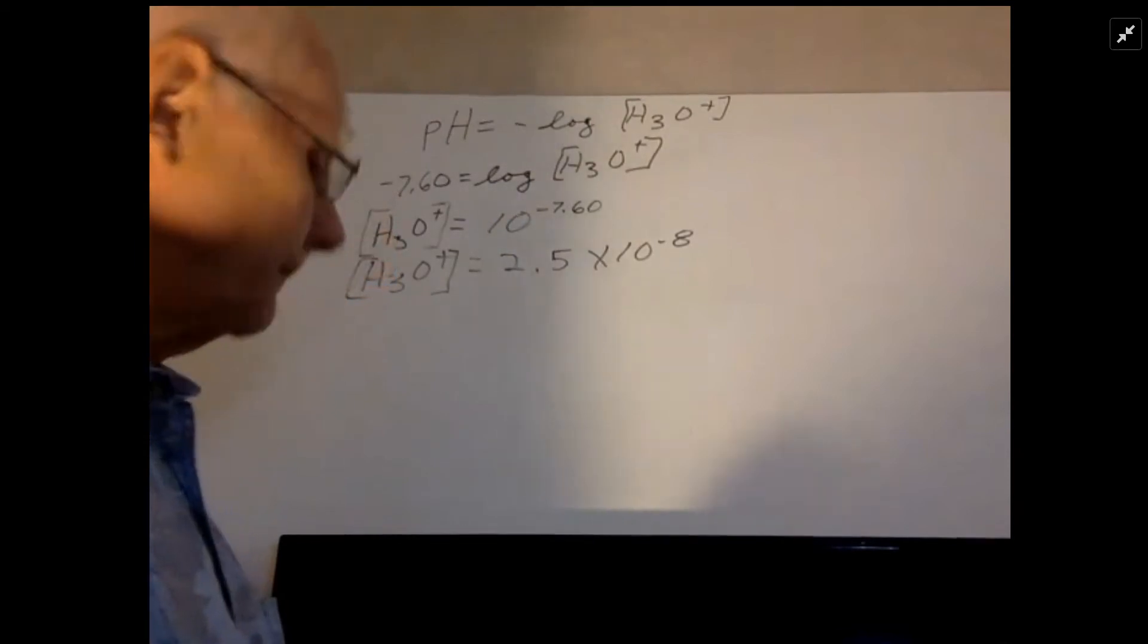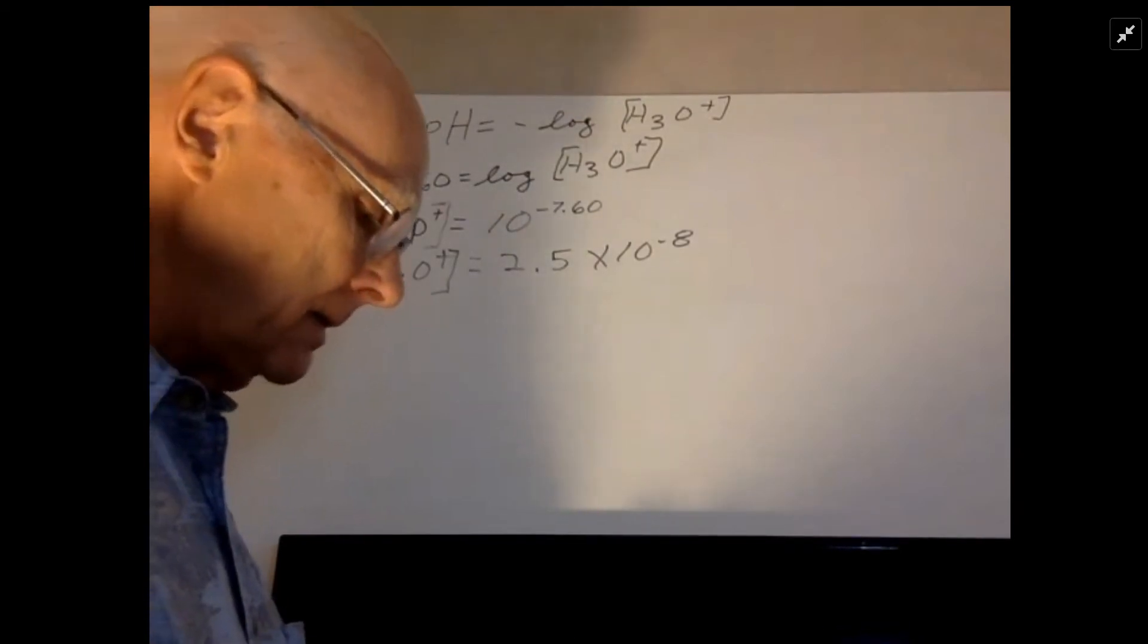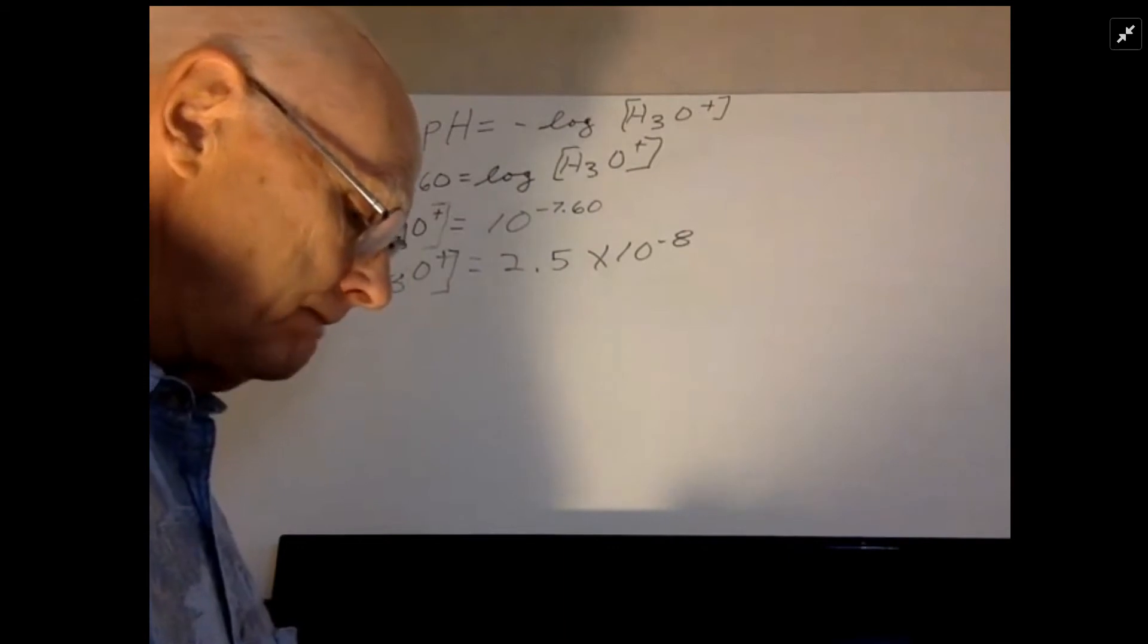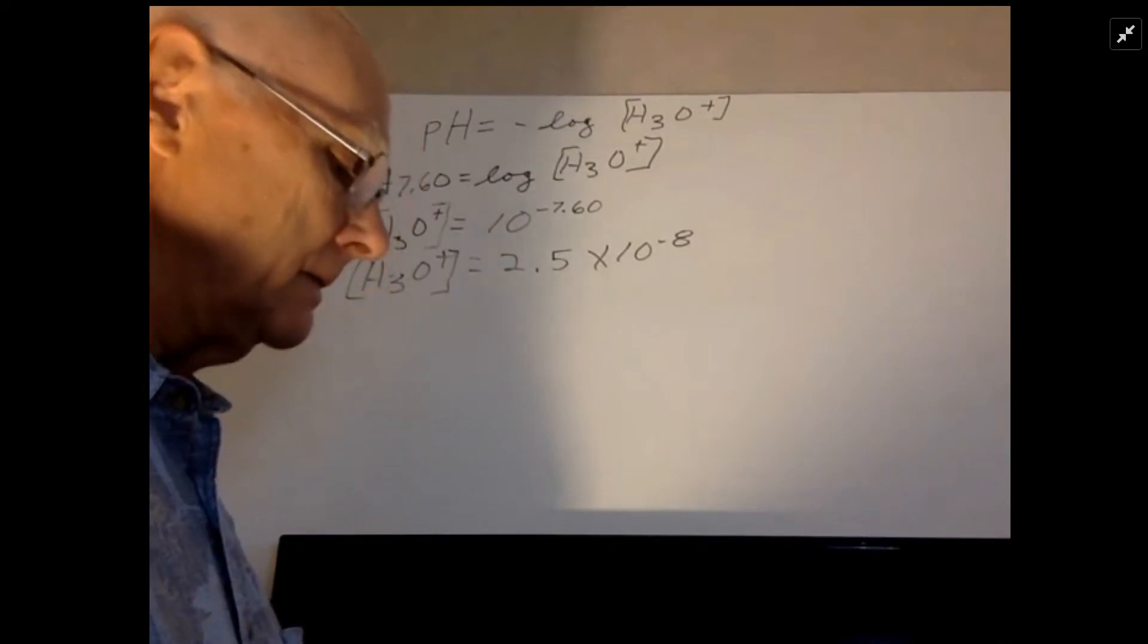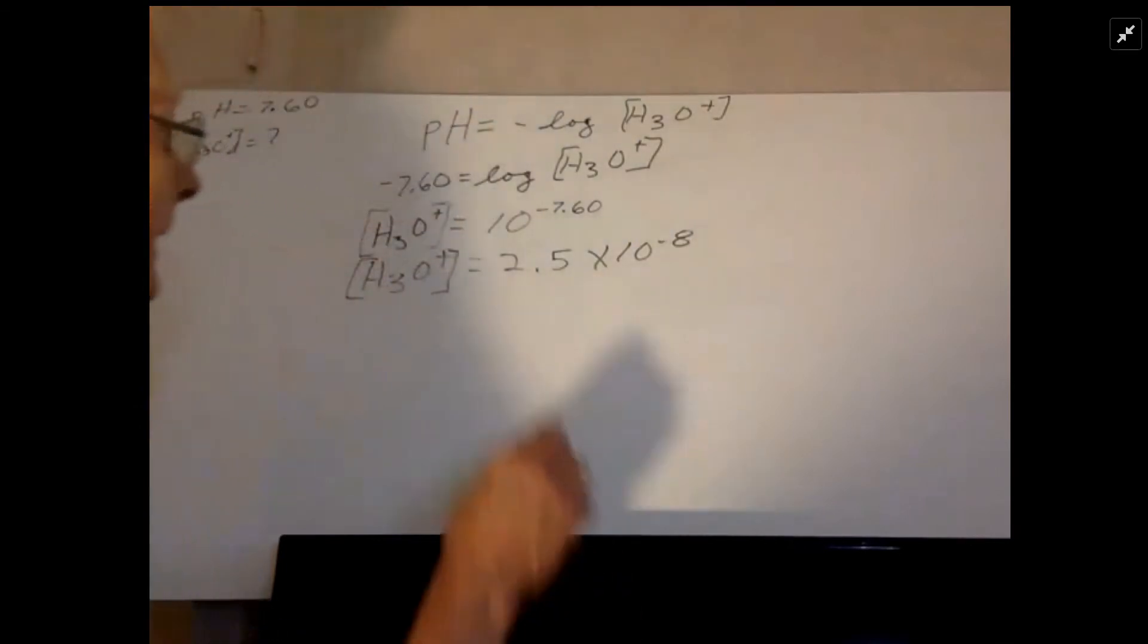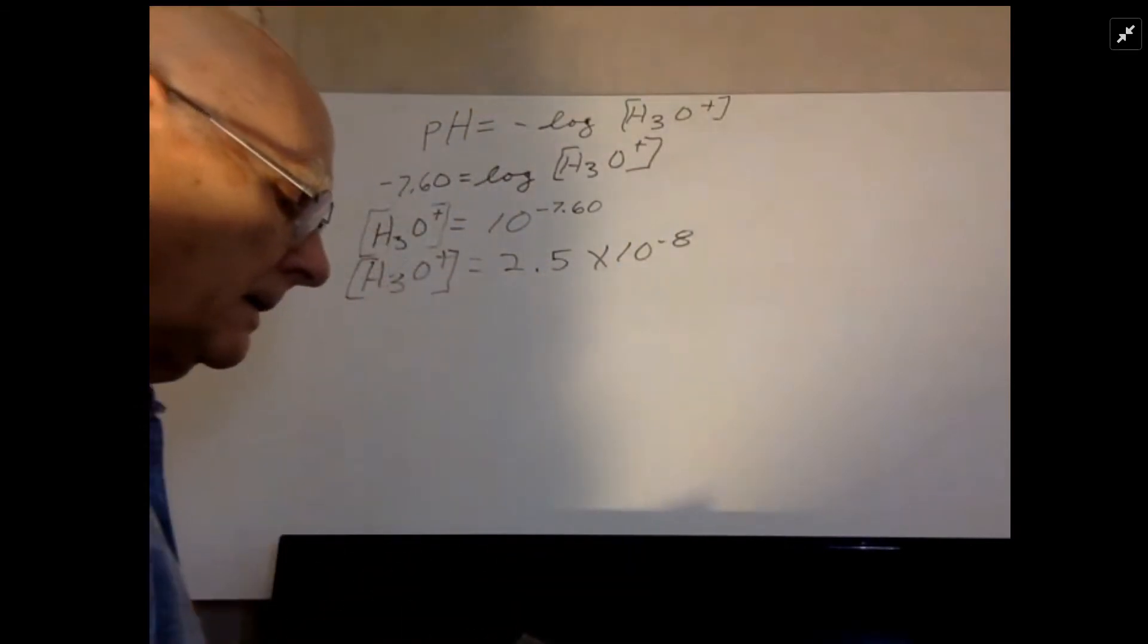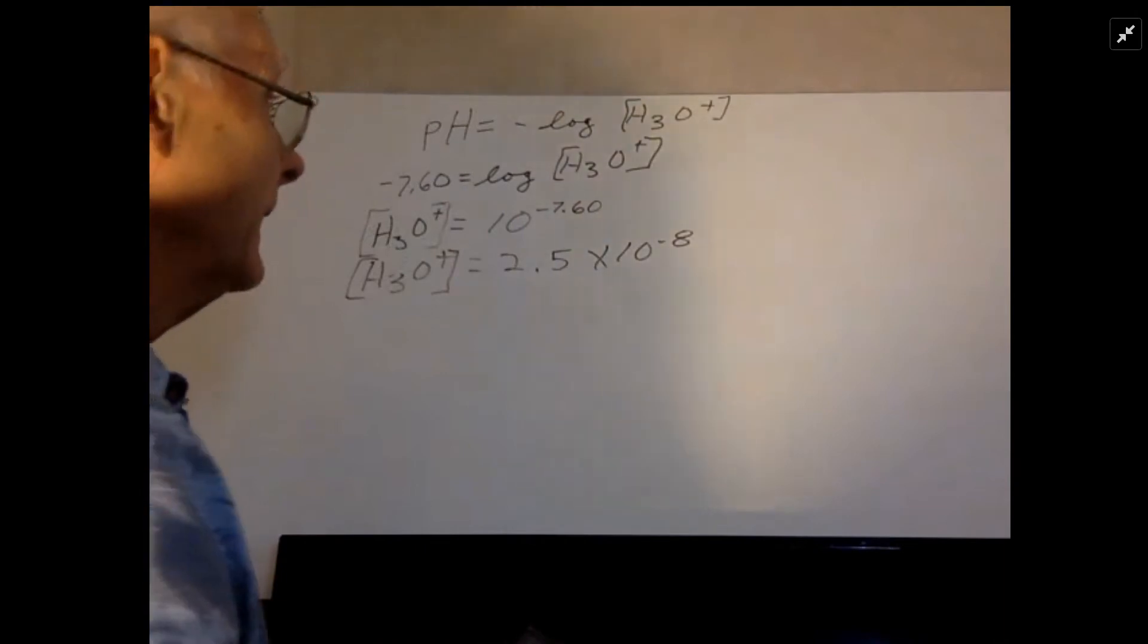So I'm hitting second, then the x, and then negative 7.6, and then enter. And when I do that, I get 2.5 times 10 to the negative 8th.